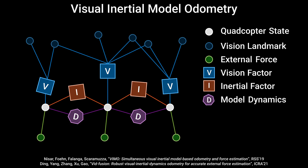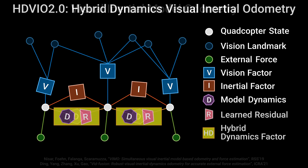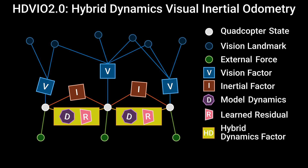In our method, we address these limitations by proposing a hybrid dynamics model that combines a first principles quadrotor model with a learning-based component that captures residual effects such as aerodynamic drag. It models the translational and rotational vehicle dynamics and tightly integrates them into the VIO system with minimal runtime overhead.